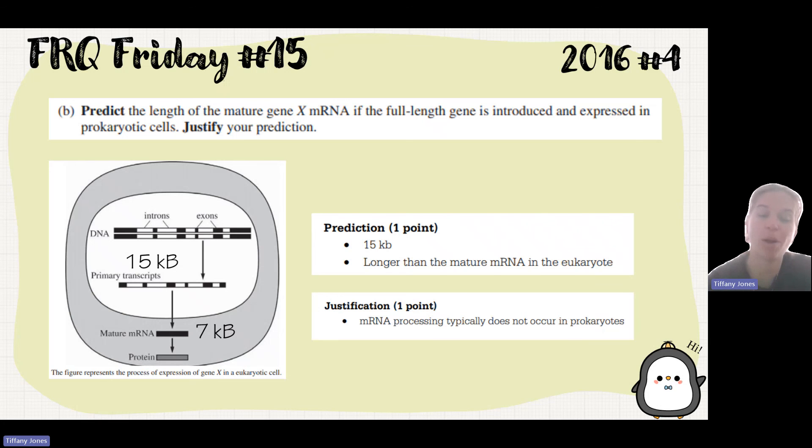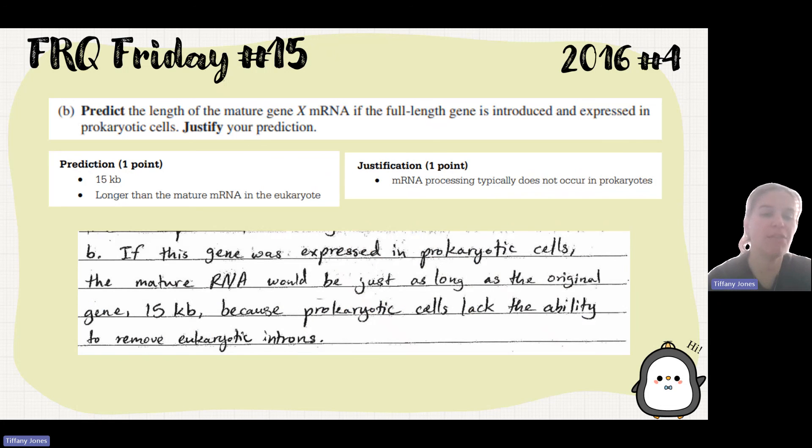So the student says if the gene was expressed in prokaryotic cells, mature RNA would be just as long as the original gene, 15 kilobases, because prokaryotic cells lack the ability to remove eukaryotic introns.